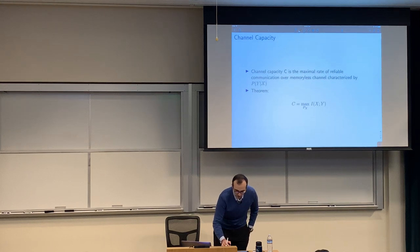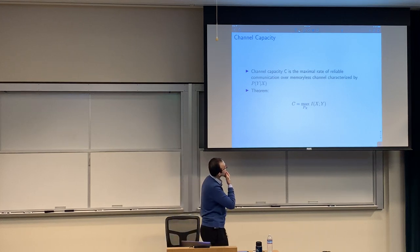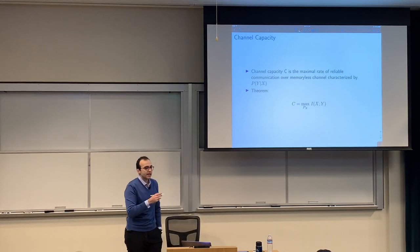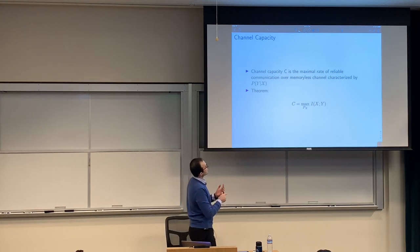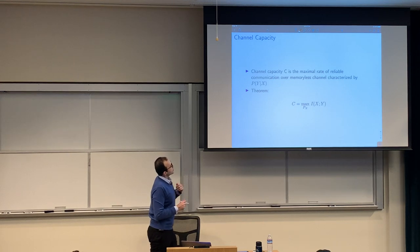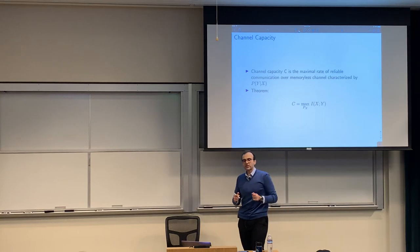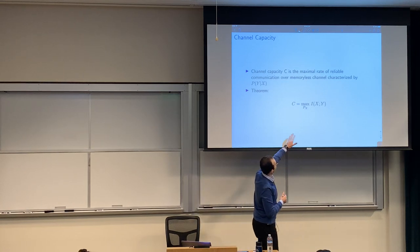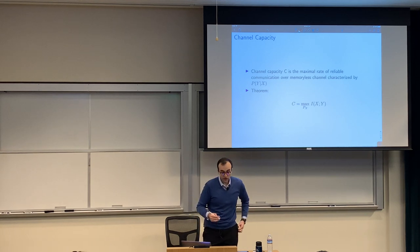Channel capacity, denoted by C, is the maximum rate of reliable communication. By reliable communication, we mean that as the sequence length increases, the error probability should go to zero — there should be vanishing error probability. The channel capacity is the maximum mutual information between X and Y. For a given channel, p(y|x) is a property of the channel, so you get the mutual information from the channel definition. If you maximize over your input distribution, you get channel capacity, which is the maximum rate of reliable communication.